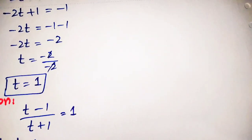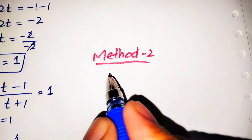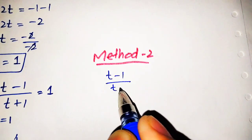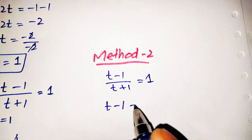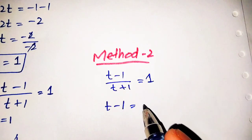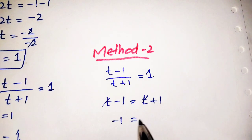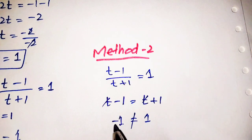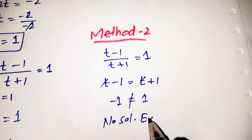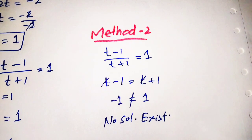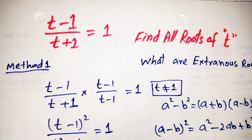In Method 2 we will again solve the equation to find the root. The given equation is (t minus 1) over (t plus 1) equals 1. Solving directly by cross multiplication, multiplying t plus 1 across gives t minus 1 equals t plus 1. The t terms cancel, leaving minus 1 equals 1, which is not possible. This also confirms that no solution exists, and from both methods we prove that the solution of this equation does not exist — it has extraneous roots.